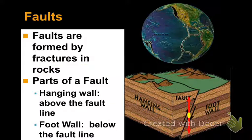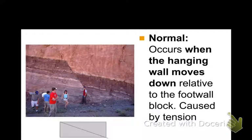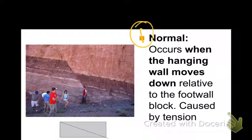We'll do a little more practice with the hanging wall and foot wall as the slides go on. There are three types of faults. This is the first type — a normal fault — where the hanging wall moves down.